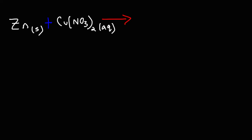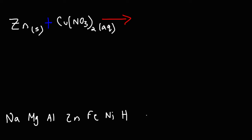I recommend going to Google Images and looking it up if you don't have it in your textbook. But here are some of them: sodium is more active than magnesium, magnesium is more active than aluminum, which is more active than zinc. Zinc is more active than iron, iron is more active than nickel, and then that's more active than hydrogen. And then you have copper, silver, and gold.